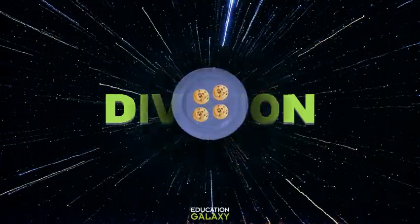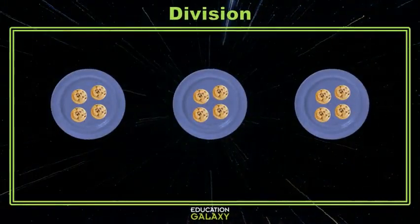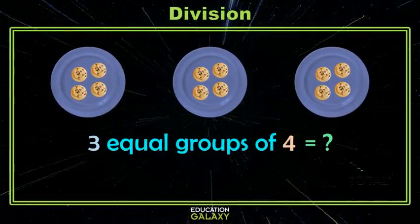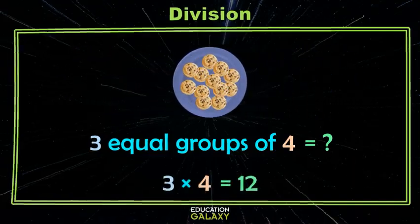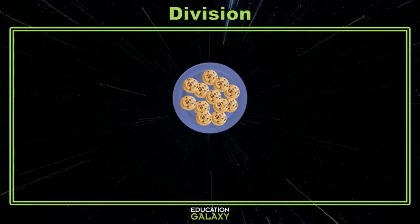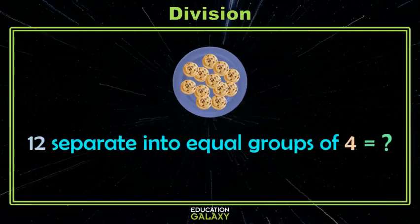But first I'll remind you that when we had equal groups and we wanted to know a total, we could use multiplication to find that total. Then we learned that if we started with a total and we wanted to separate that into groups of equal size,